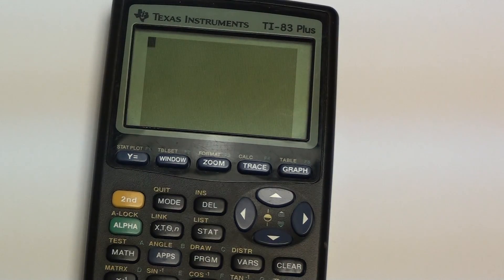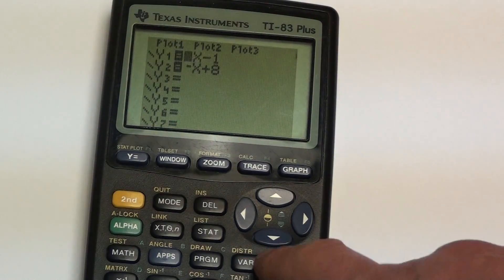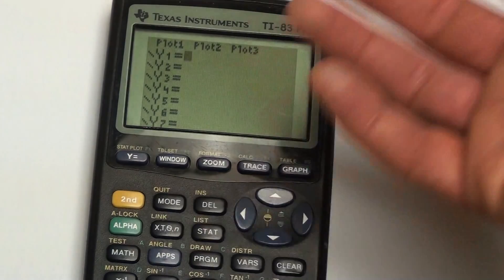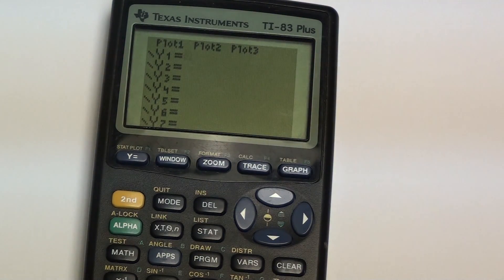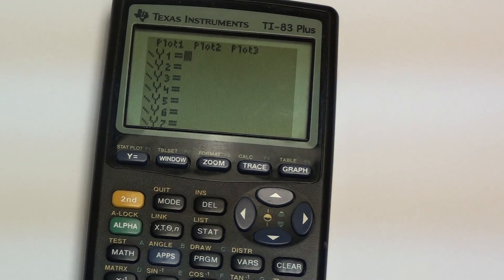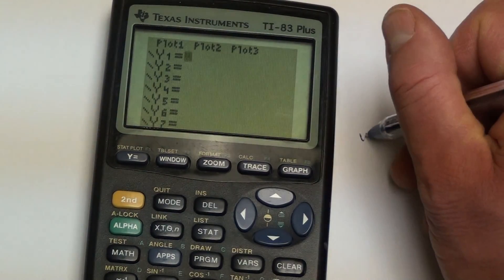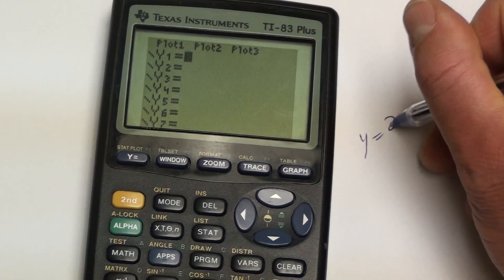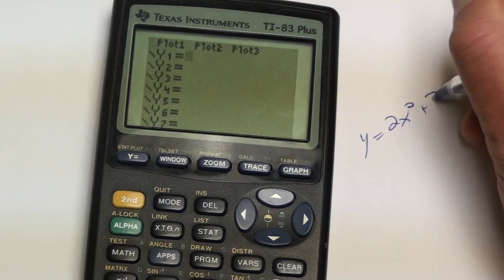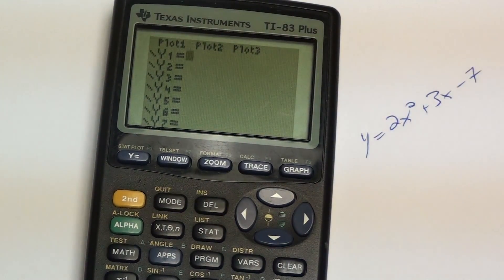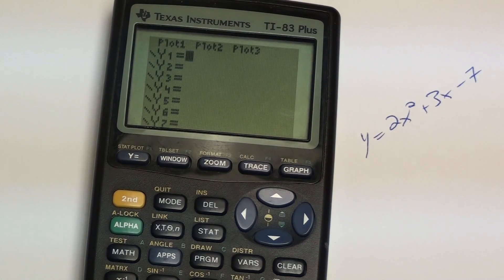So I want to find the x-intercepts. First, I want to enter in my quadratic. Clear any other previous equations, and you're going to enter it in. So the quadratic I'm going to use here is y equals 2x squared plus 3x minus 7. That is the quadratic I want to enter in. So put that in.